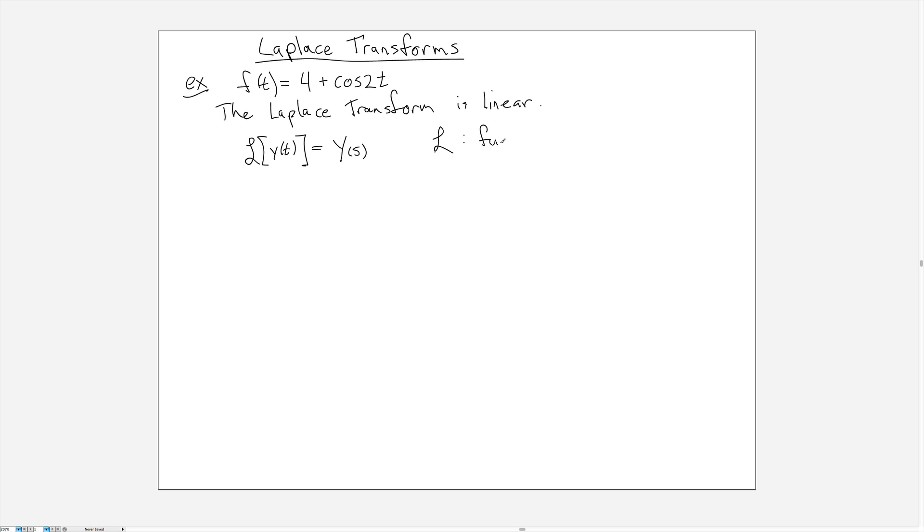What that means is it acts, this thing script L, acts to take functions as input and return other functions as output. So that's what we call an operator. The Laplace transform is in fact an operator that's linear in its argument.